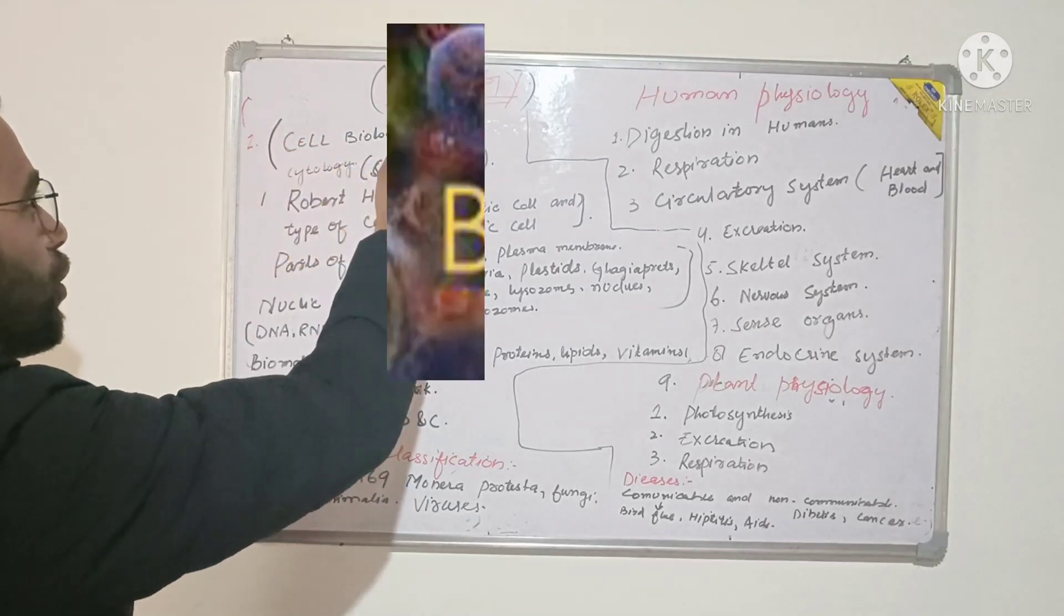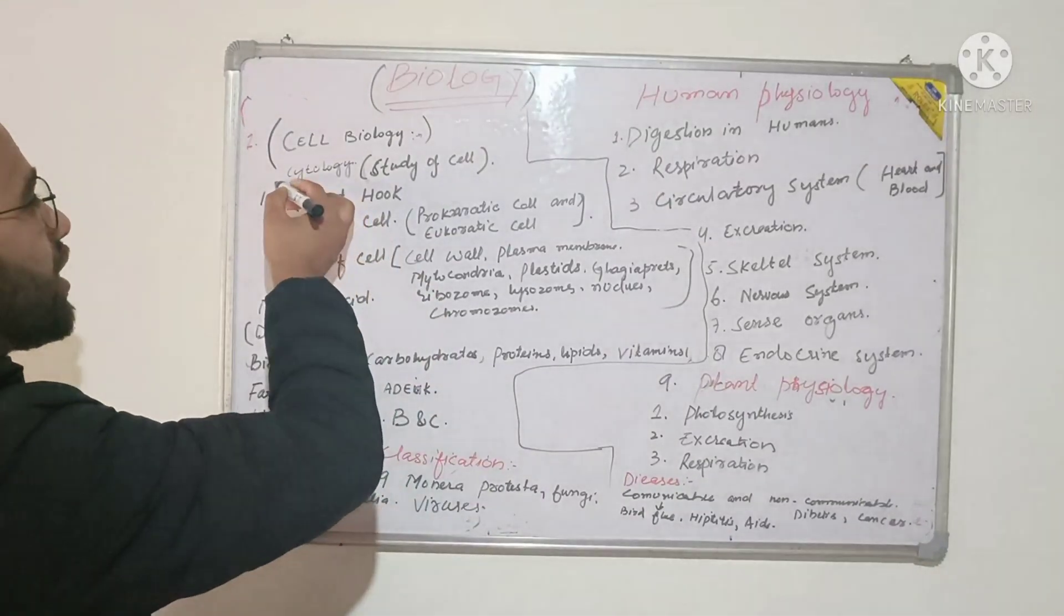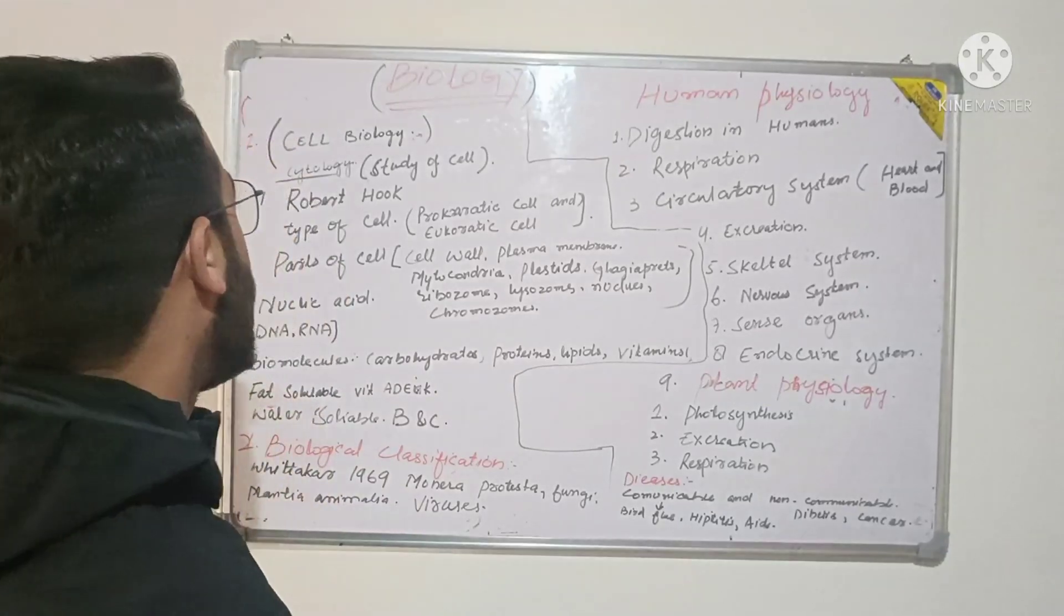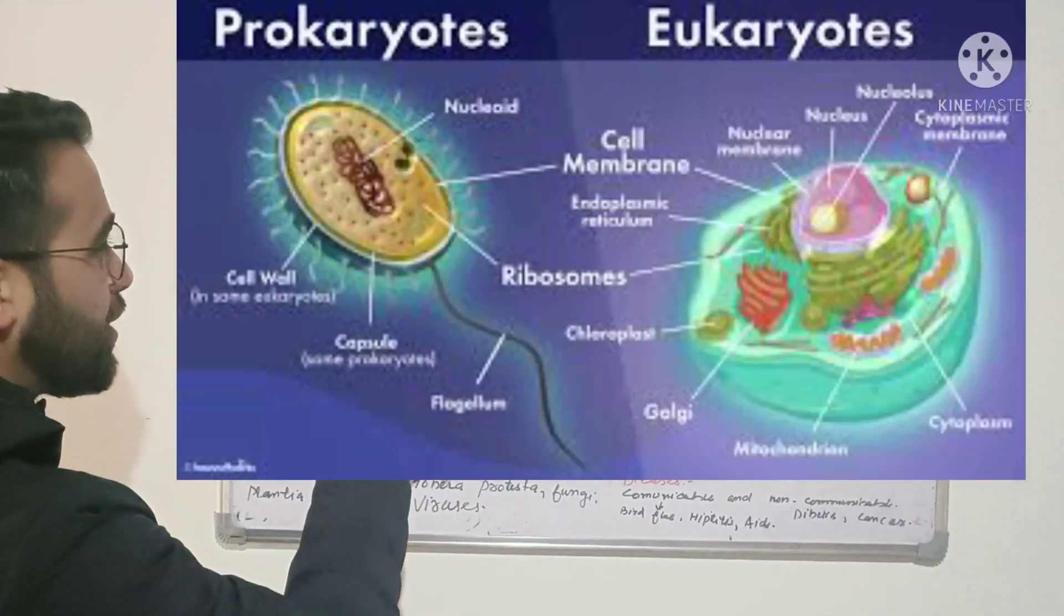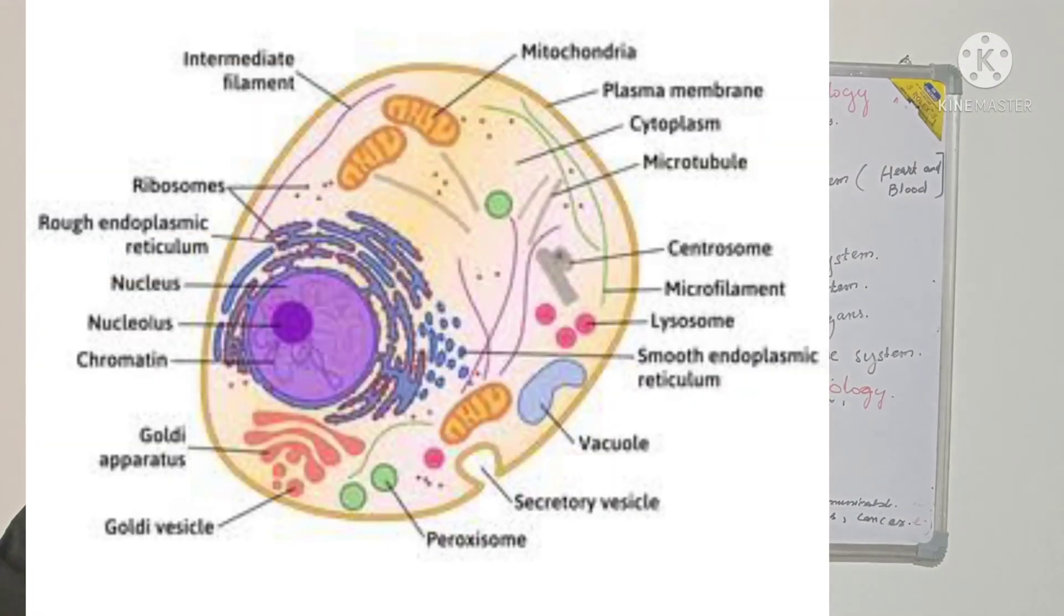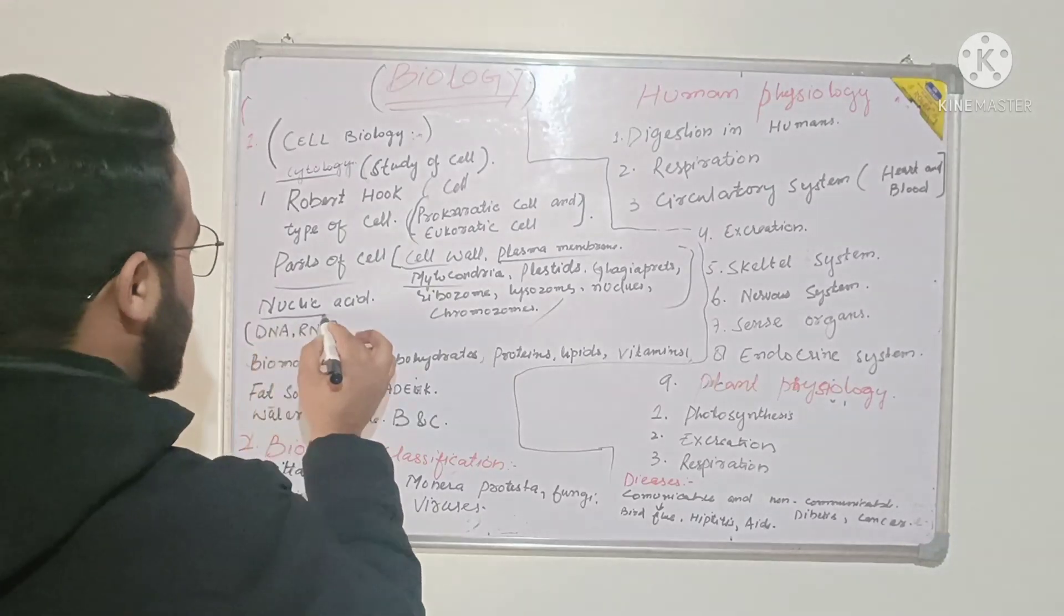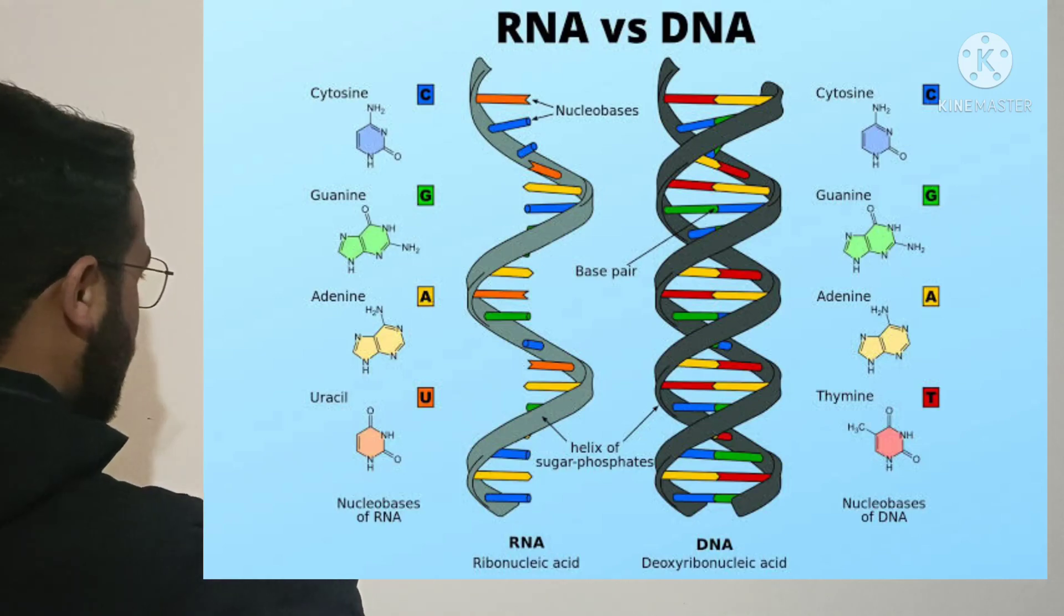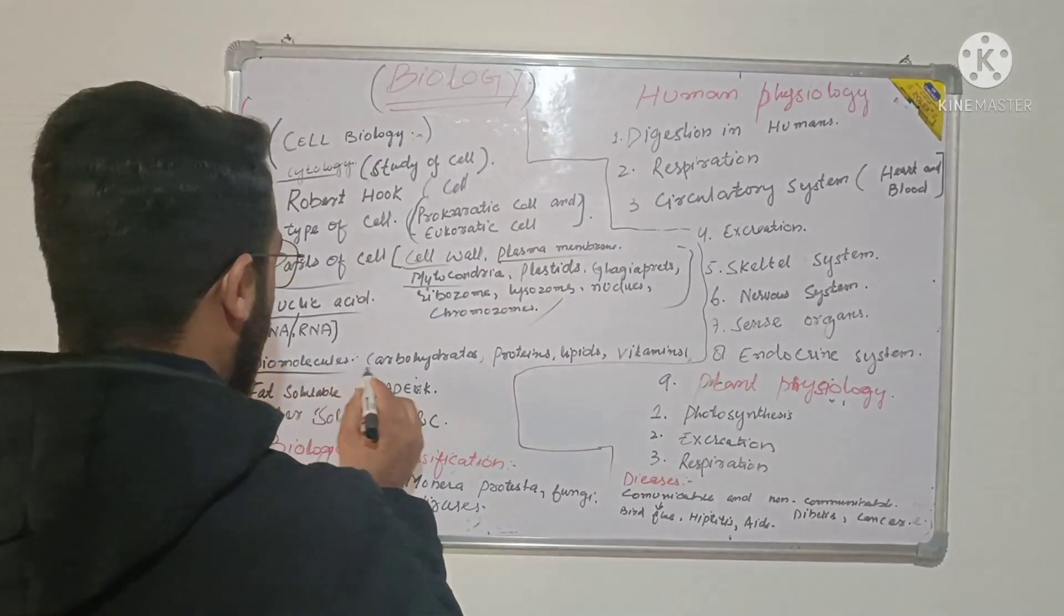Biology's first topic is cell biology, also called cytology, the study of cells. Robert Hook discovered cells. Then you have two types of cells. You have the parts of the cell: cell wall, plasma membrane, mitochondria, plastids, golgi apparatus, ribosomes, lysosomes, nucleus, chromosomes. Then you have the nucleic acids: deoxyribonucleic acid and ribonucleic acid. You don't have to go too deep into the differences.